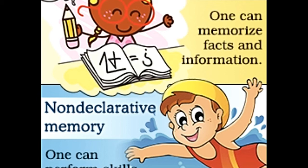Implicit memory, or non-declarative memory, has the inherent ability to recall events and information without requiring conscious effort. The person is able to perform actions without declaring the information pertaining to them. It is subdivided into two types: procedural memory and priming.